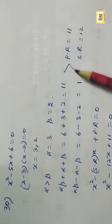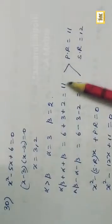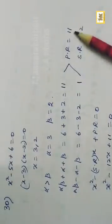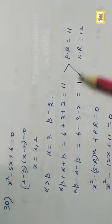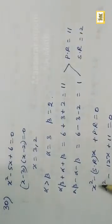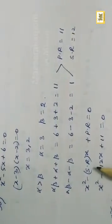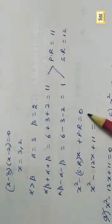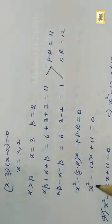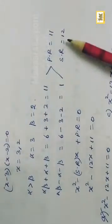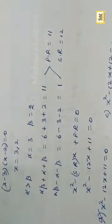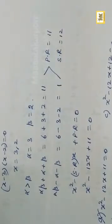Sum of roots = 11+1 = 12. Product of roots = 11×1 = 11. Equation: x² - 12x + 11 = 0. Option A.